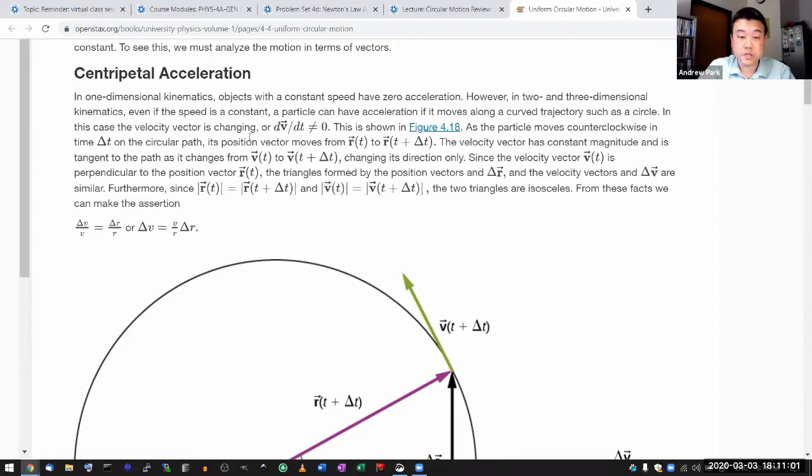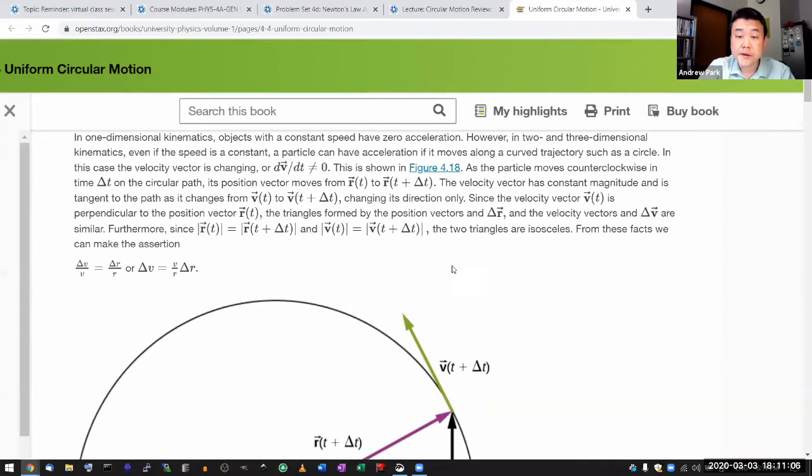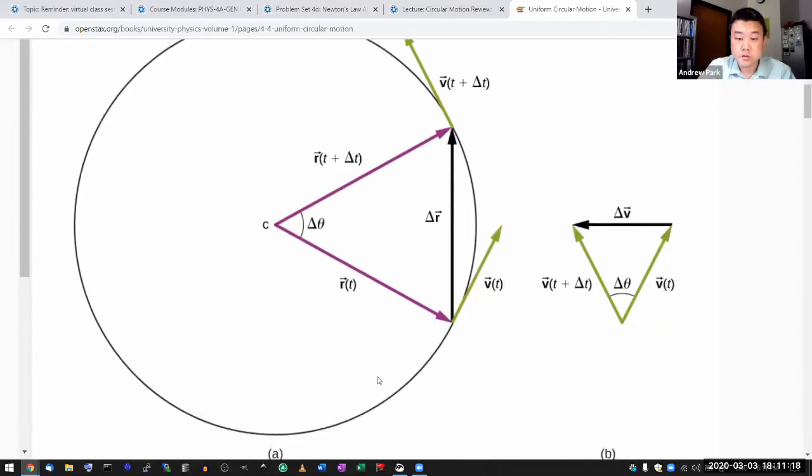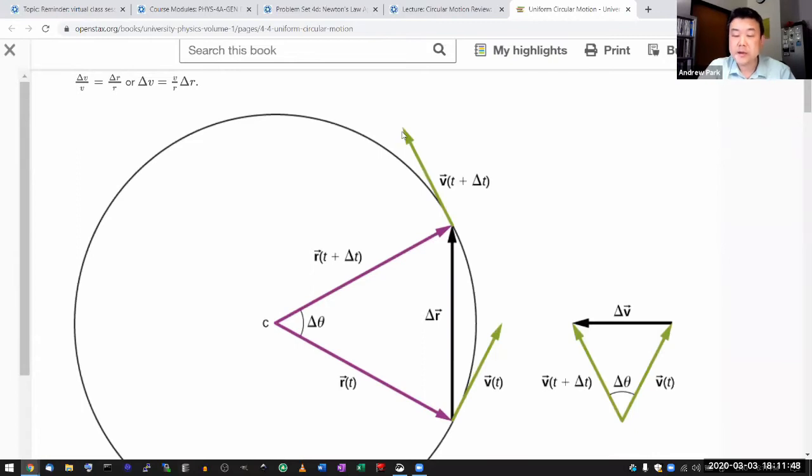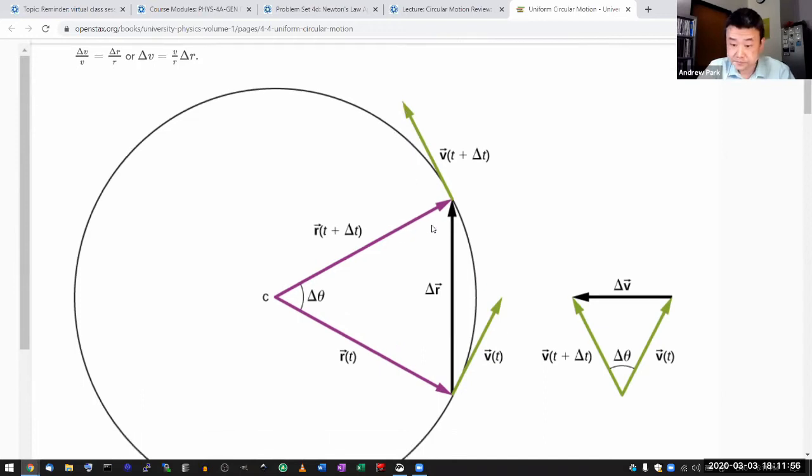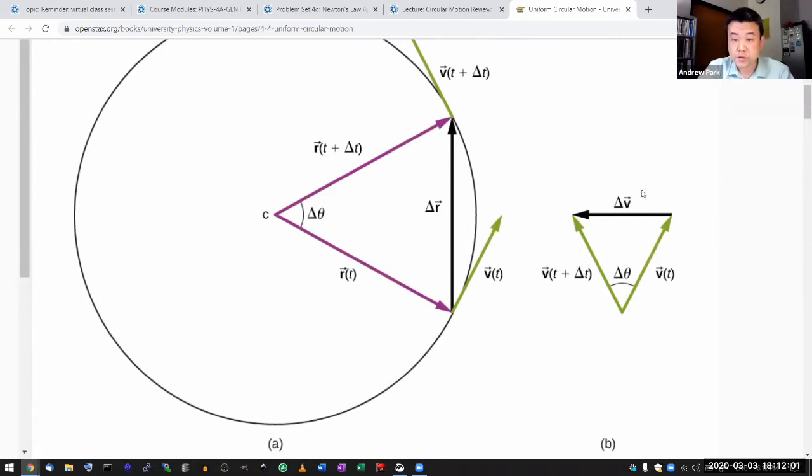In this case the velocity vector is changing, and it's shown in this figure here as the particle moves counterclockwise in time delta t on this circular path. This example of motion, imagine a particle moving from this point to this point here, it's moving counterclockwise. So over that duration of time delta t, its displacement is delta r here. You can see that comparing the tangential velocity here with the tangential velocity here that the direction of tangential velocity has changed.